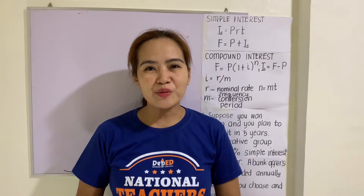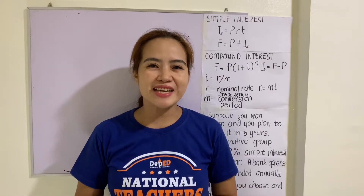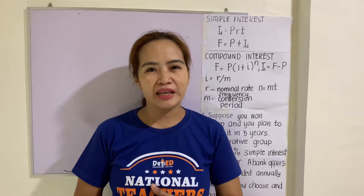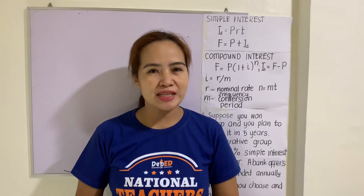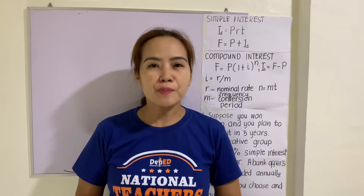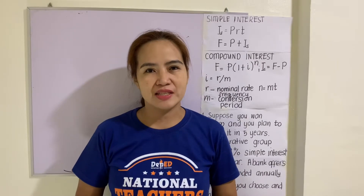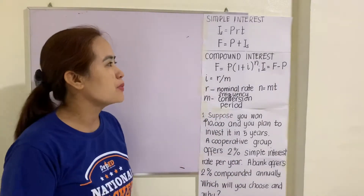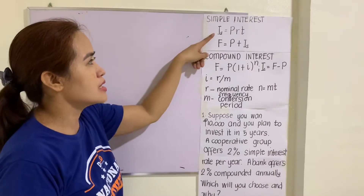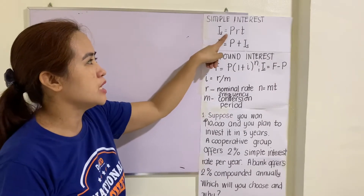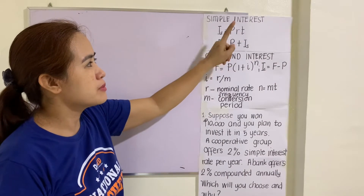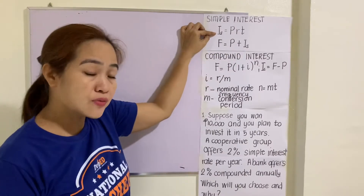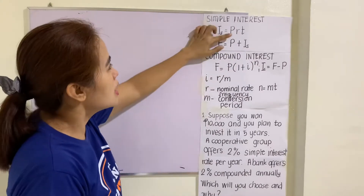Good day everyone, welcome to another session of Mommy Teo Teaches Math. Our topic for today is illustrating and distinguishing simple and compound interest. We have here the formulas: I sub S is equal to P times R times T, where I sub S is the simple interest.